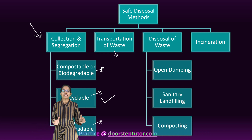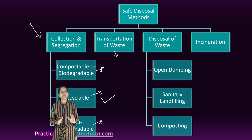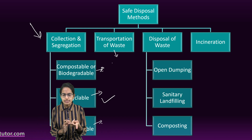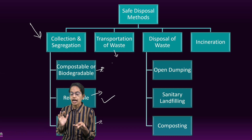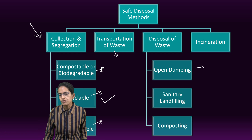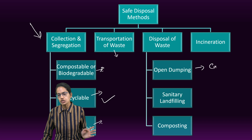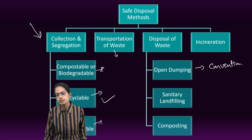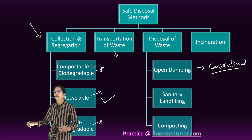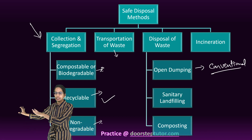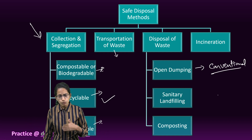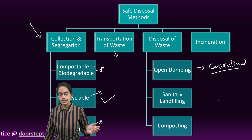The next is how do we dispose of waste. Three simple methods: open dumping, sanitary landfilling, and composting. Open dumping is a very conventional and the least expensive method — you go away from the city and dump the waste, and over the period of time it would degrade and be recycled into the system.